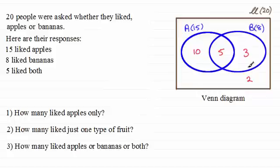So we've got 10 people then liking just apples only. Number two, how many liked just one type of fruit? Well, that's got to be apples only and bananas only. 10 plus 3. In other words, 13.